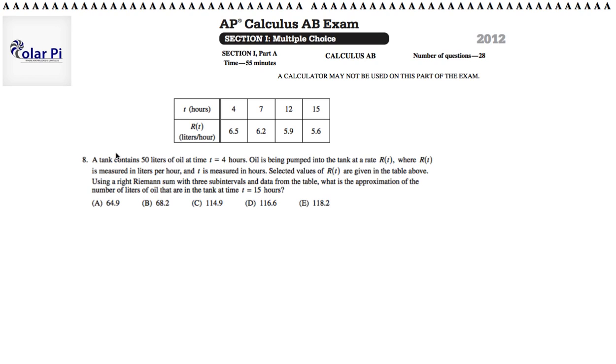In problem 8, a tank contains 50 liters of oil at time t equals 4 hours. So that's to say V(4) is equal to 50. The volume of the tank is 50 liters at time t equals 4 hours.